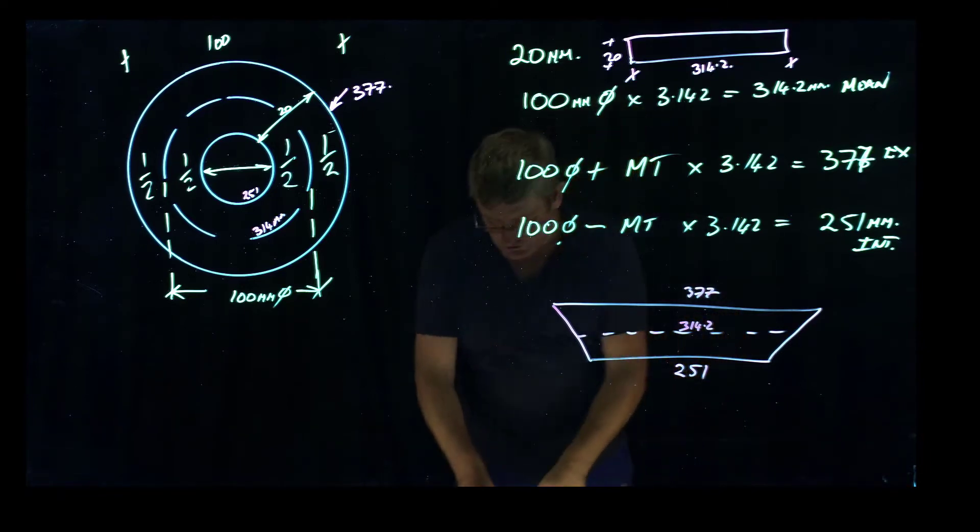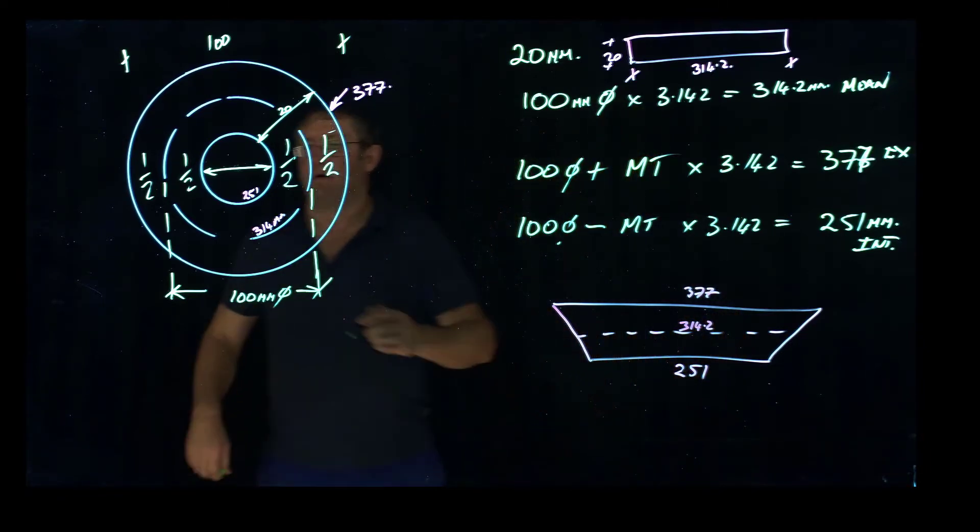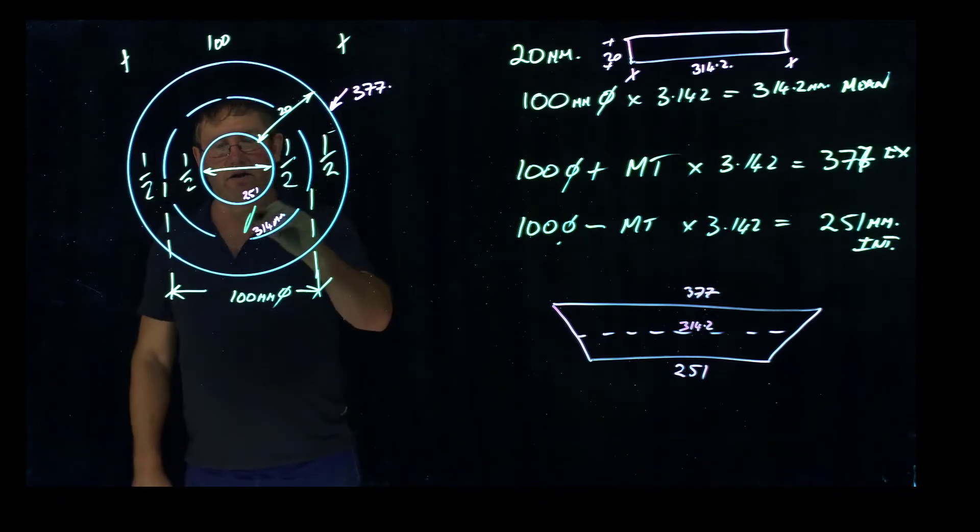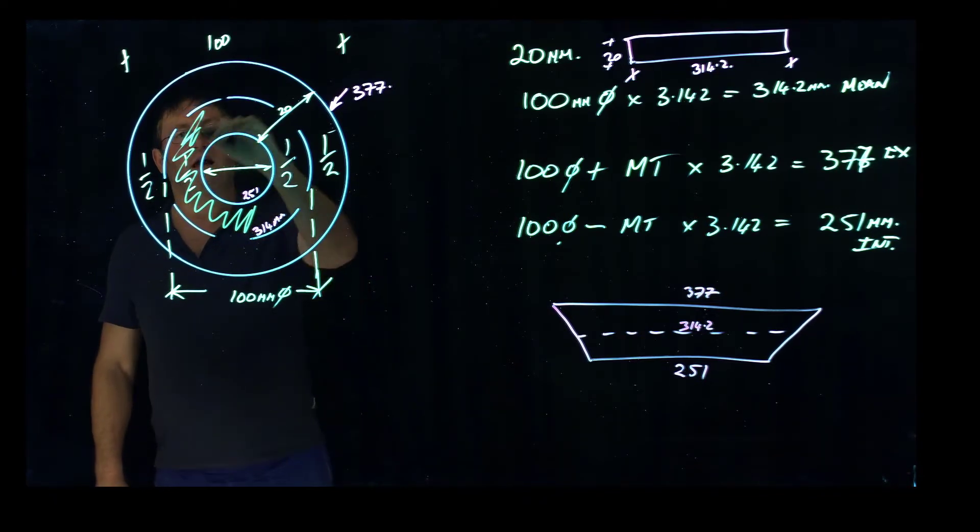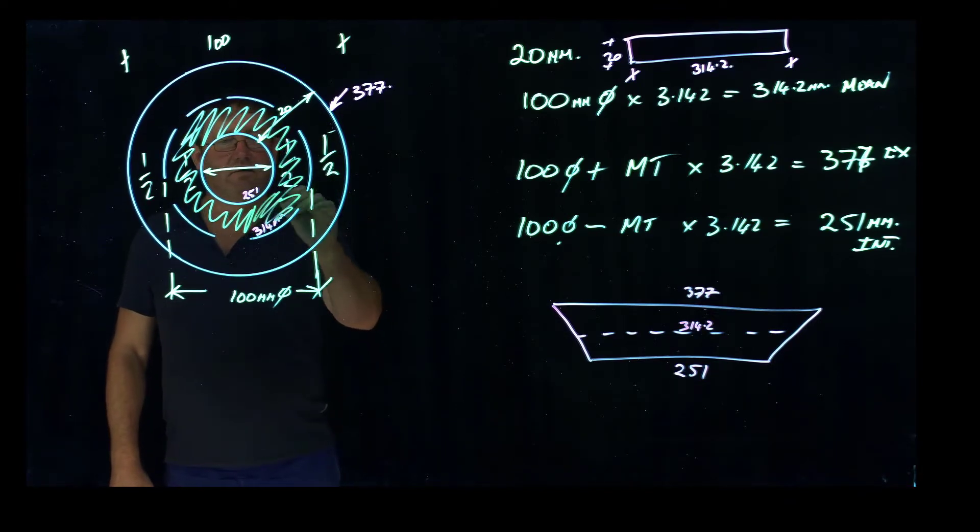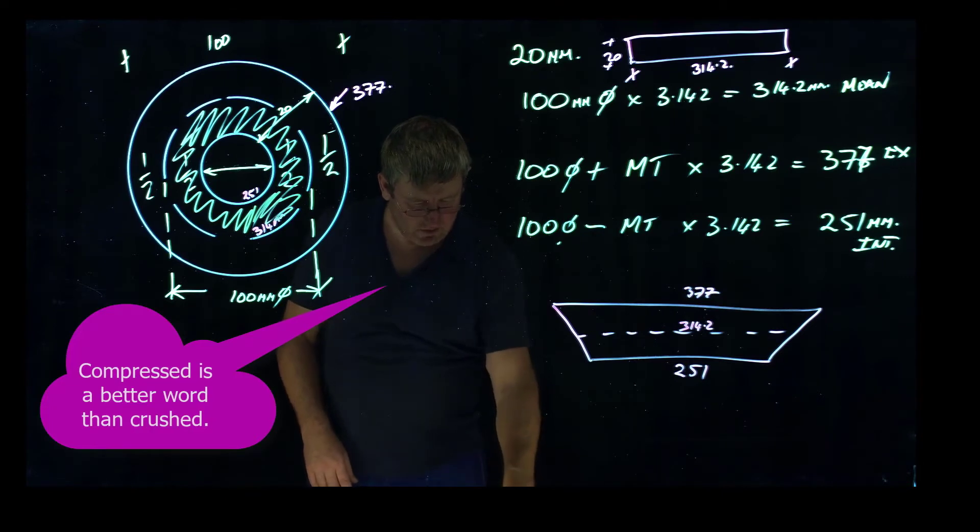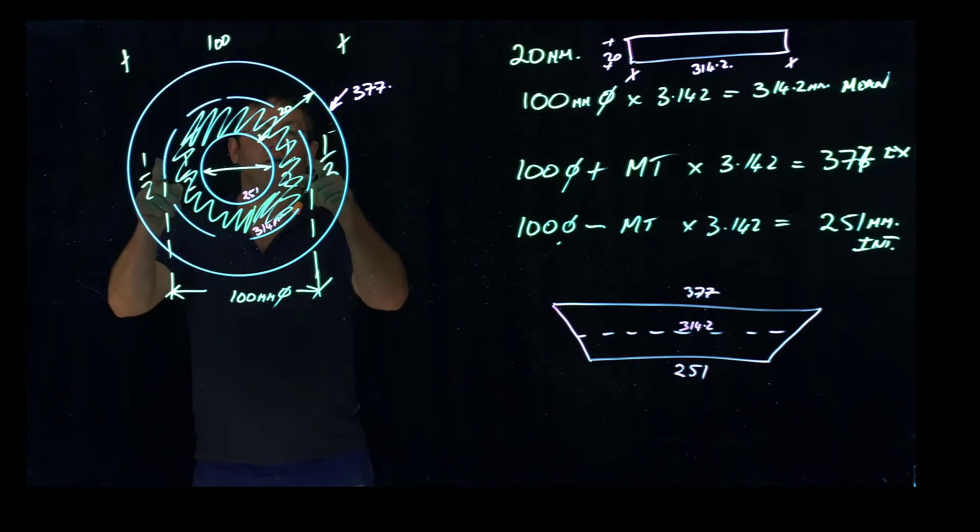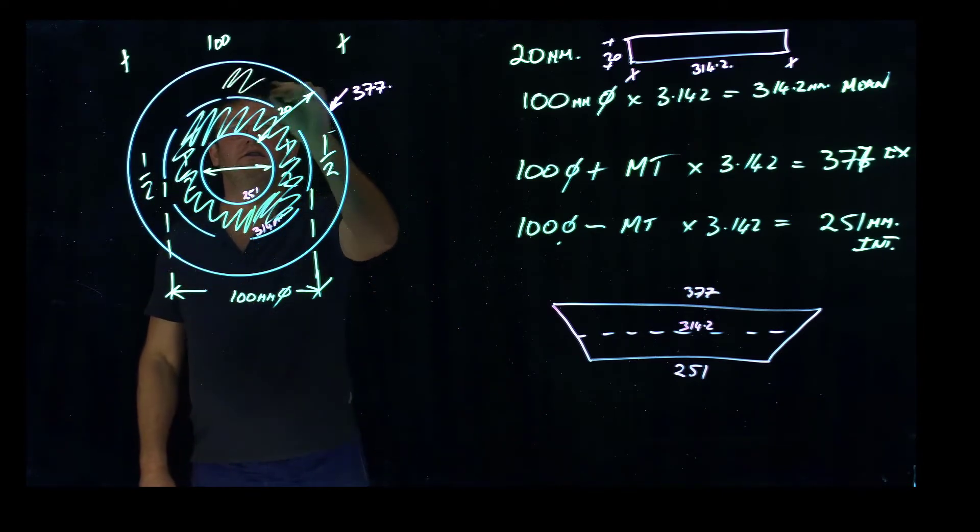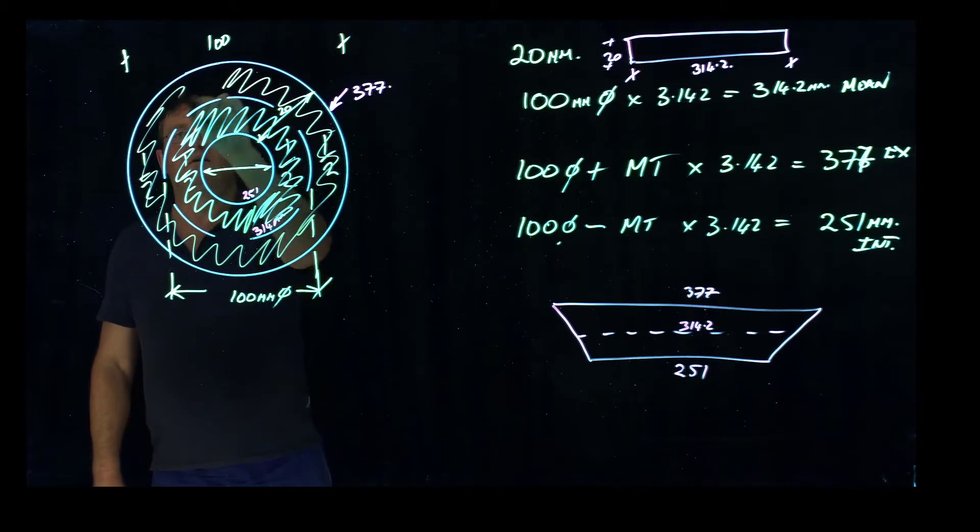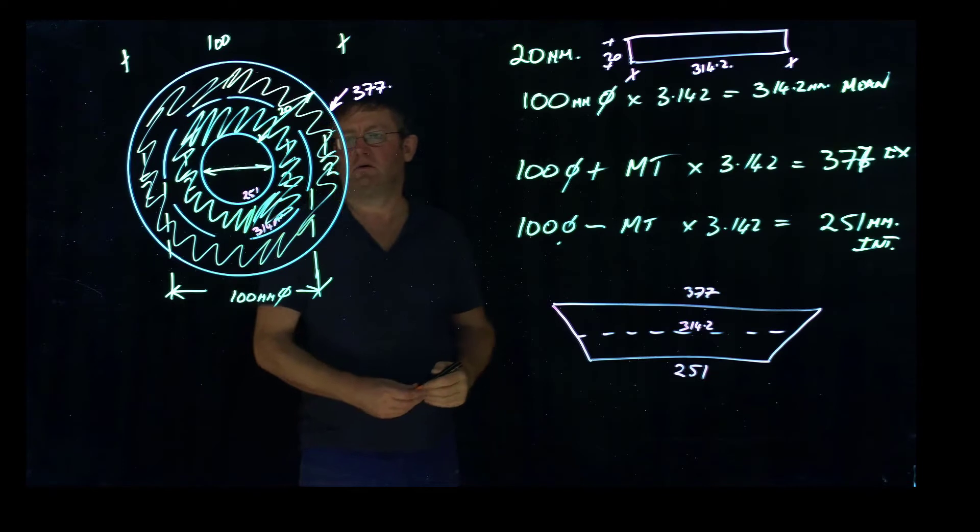Well, as you roll it, the material on the inside of the mean line, this portion through here, is shrinking, being crushed in. The material on the outside of the mean line, this portion right around the outside here, is stretching.